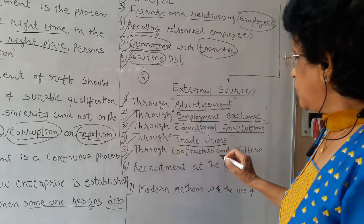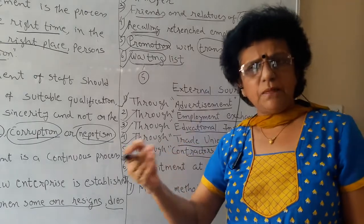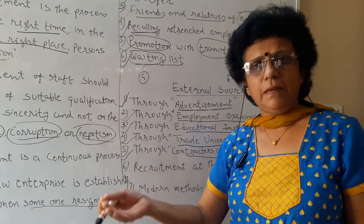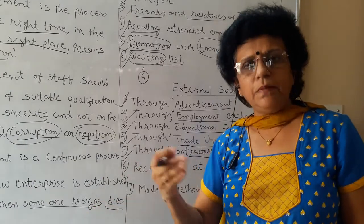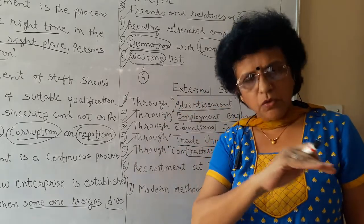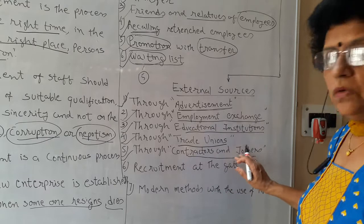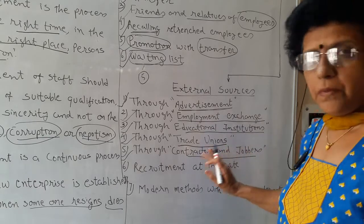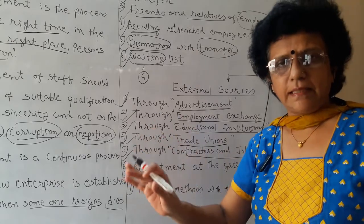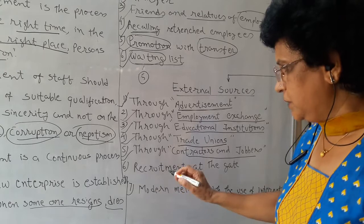The next source is through contractors and jobbers. When you want unskilled labour or temporary job-oriented labour, you can contact contractors who take work from labour and provide you a good number of employees on a contract basis — 50 people, 100 people like that. Not much of the full selection process needs to be done; your work gets done easily.